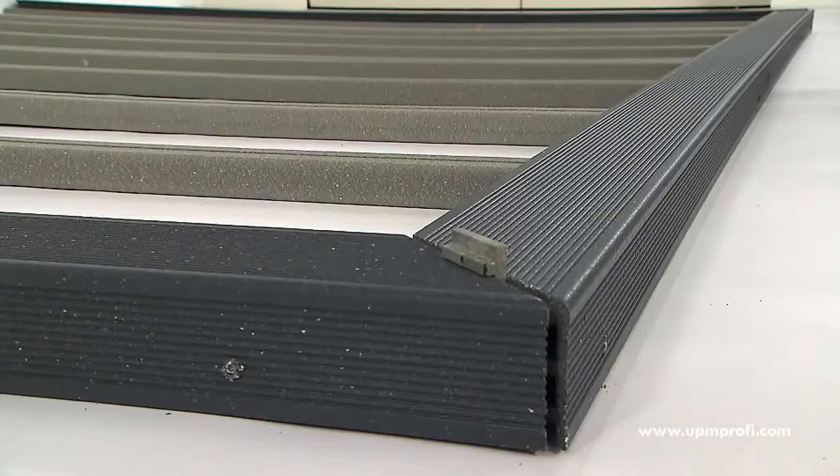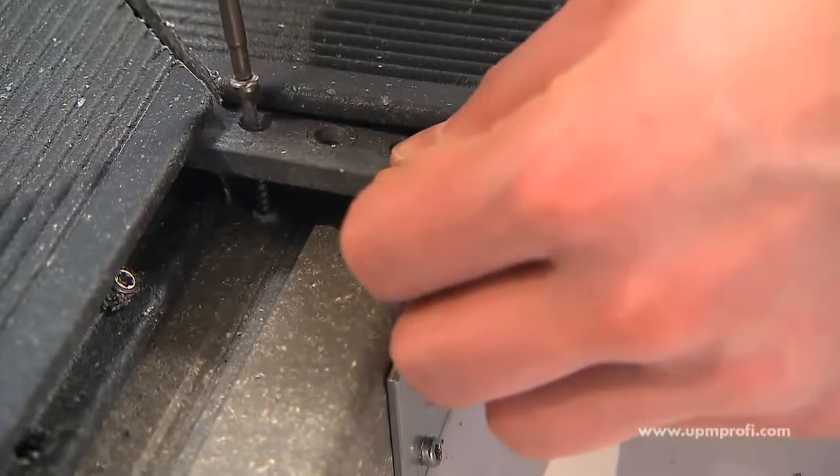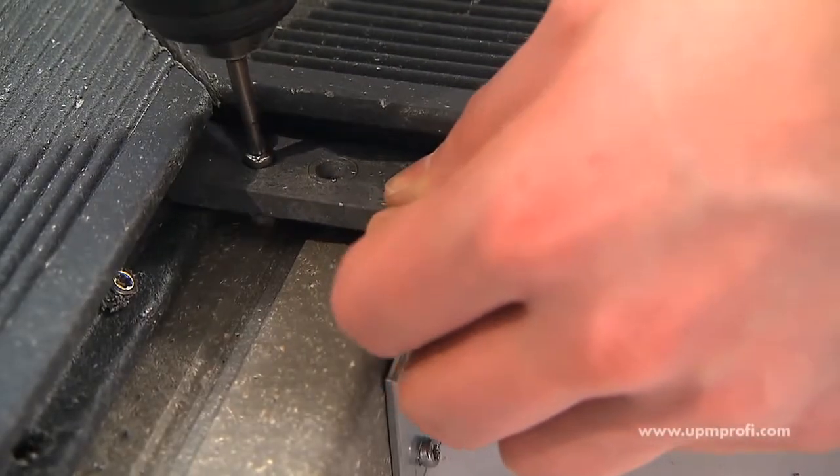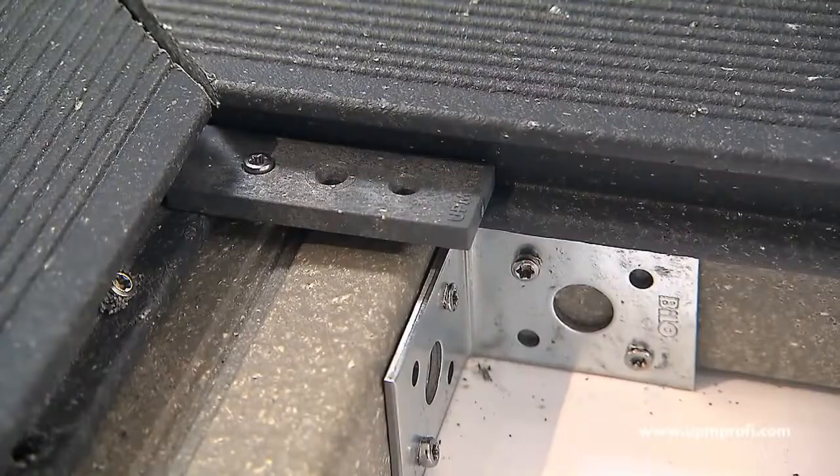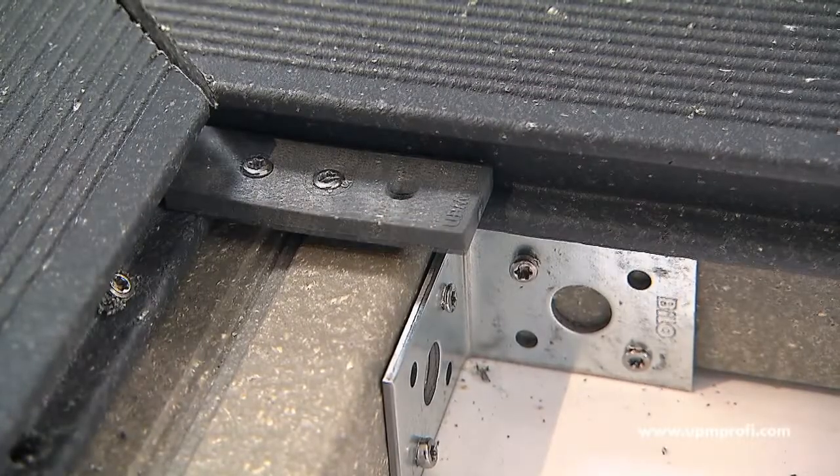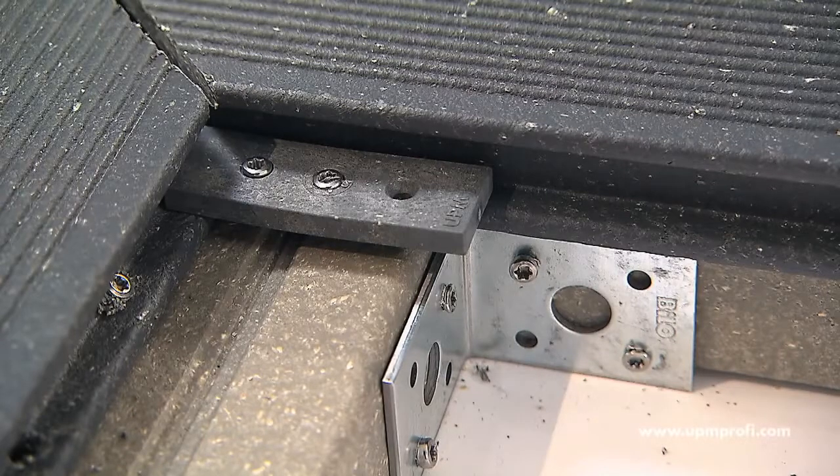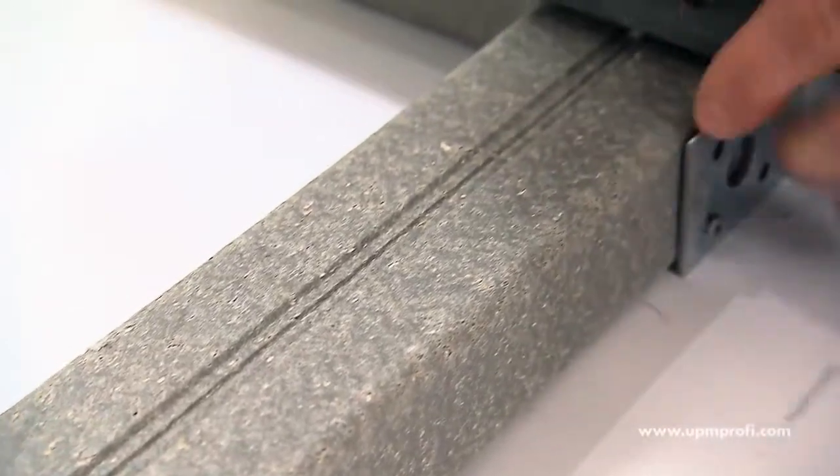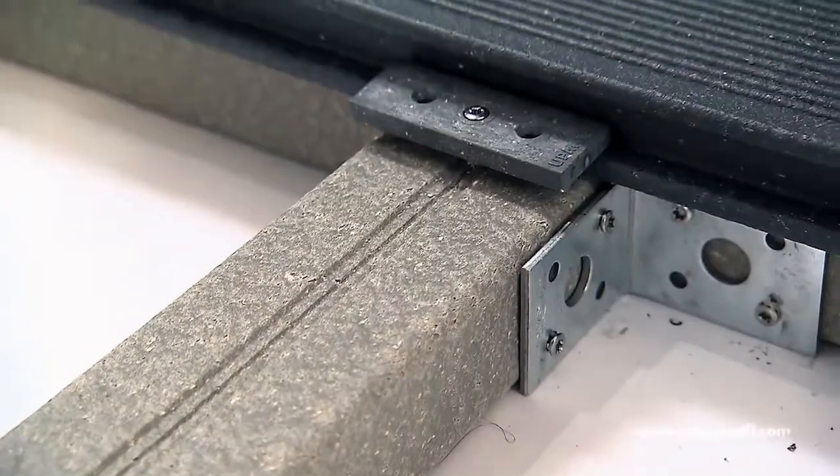After this, the first deck board is joined to the rail step by attaching a Profi clip onto the support rail. Two screws ensure a strong attachment. On the other support rails the Profi clips are positioned centrally and fixed with one 4 by 40 millimeter screw in the center hole.